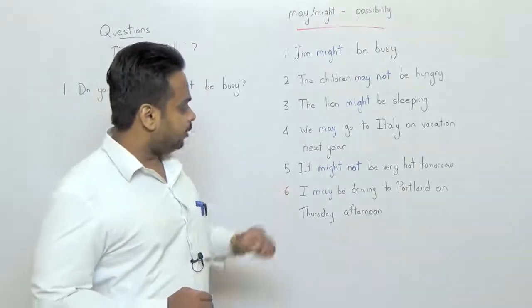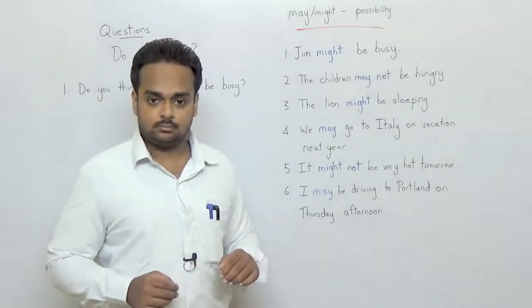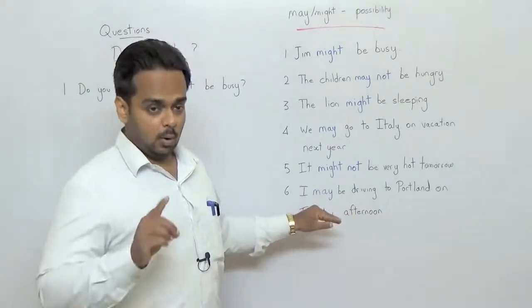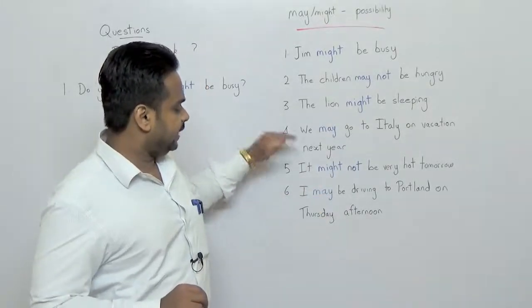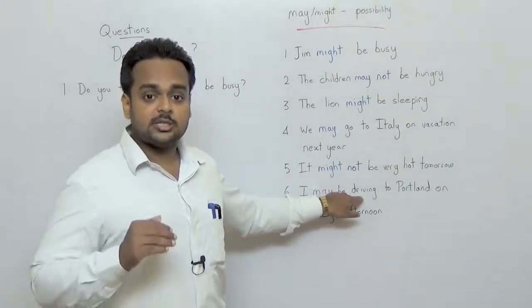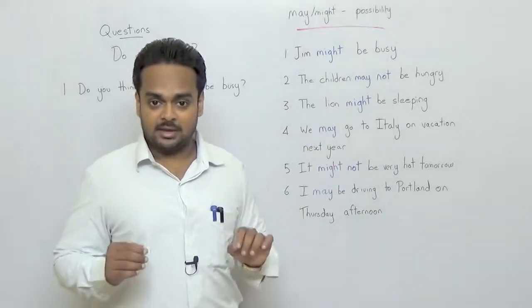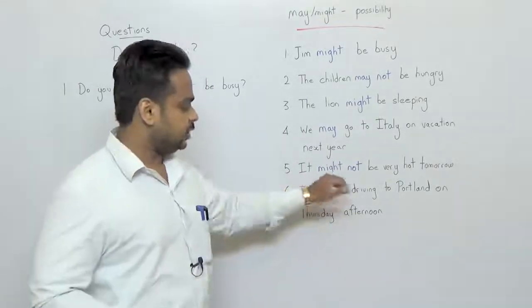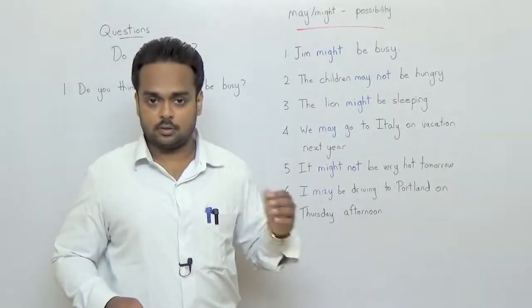And in the last example I may be driving to Portland on Thursday afternoon. Now of course this talks about the future because it says Thursday afternoon. However this is like this sentence over here because the sentence makes a guess about a continuous action in the future. So on Thursday afternoon I think I will be in the middle of a continuous action and that action is driving. So I may be driving to Portland on Thursday afternoon.